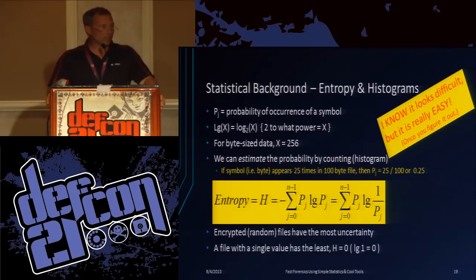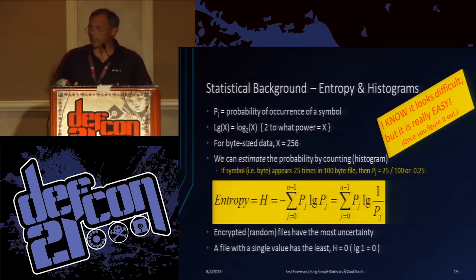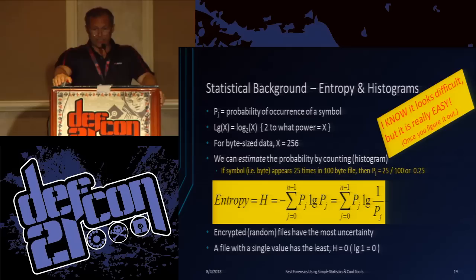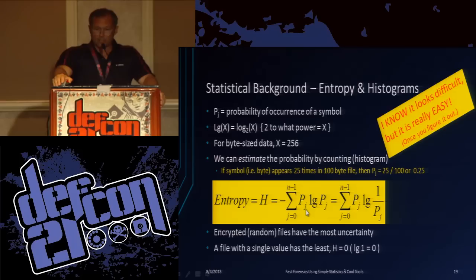A little bit of statistics here. P is the probability. The log is often abbreviated LG to mean log base 2, which is simply 2 to what power equals x. So log base 2 of 256 is 8, log base 2 of 4 is 2, log base 2 of 8 is 3, and so on. We can estimate the probability in a file by counting. You take a file, count how many zero bytes, count how many one bytes, count how many two bytes, and so on - that's the histogram, the frequency distribution of each byte. Given that count and the total number of bytes, we can compute the probability for each byte. If zero appeared 25 times out of 100, the probability is 0.25.